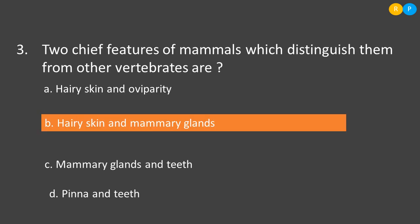The next question: the two chief features of mammals which distinguish them from other vertebrates are? Some characters are unique to mammals and cannot be observed in other vertebrates. Option A: hairy skin and oviparous — hairy skin is a feature of mammals, but not all mammals are oviparous; the majority are viviparous. Option B: hairy skin and mammary glands — animals with mammary glands are classified as mammals, and hairy skin is another unique feature of mammals. So these two are the unique features seen in mammals, making Option B correct.